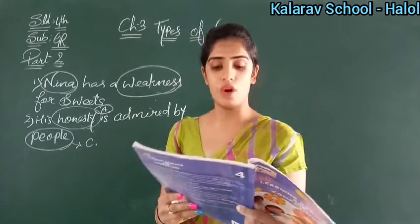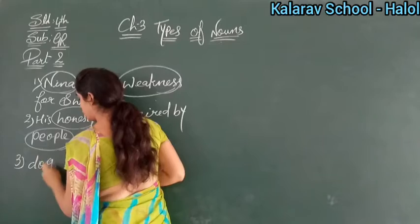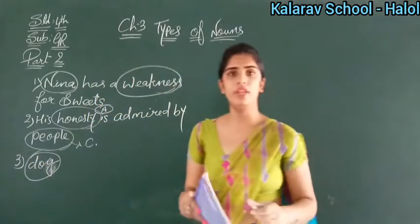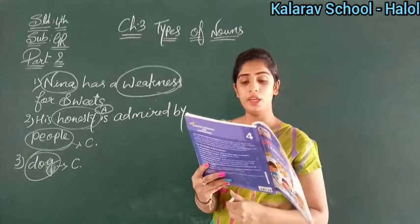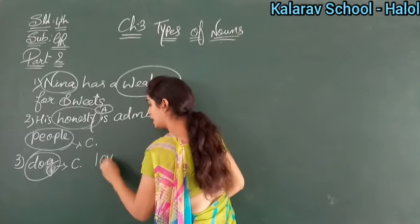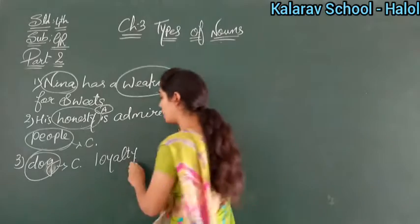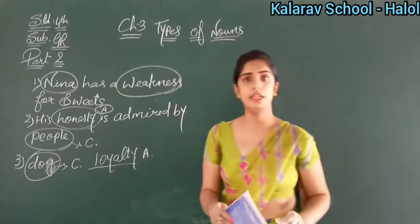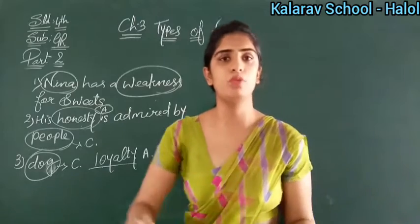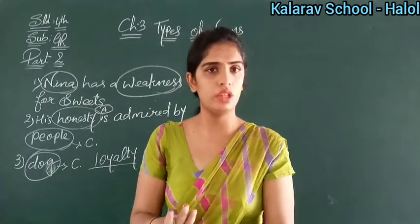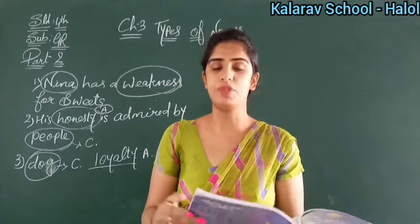Third sentence: The dog was noted for his loyalty. Dog is the name of an animal — we can touch the dog and see it also, so dog is a concept noun. Loyalty is the abstract noun — dog ki jo loyalty hai, we can feel it. Next, fourth sentence: The pain caused by the tooth was unbearable. Pain — jab tumko chot lagti hai, you feel the pain — so pain is the abstract noun. Tooth is the concept noun.